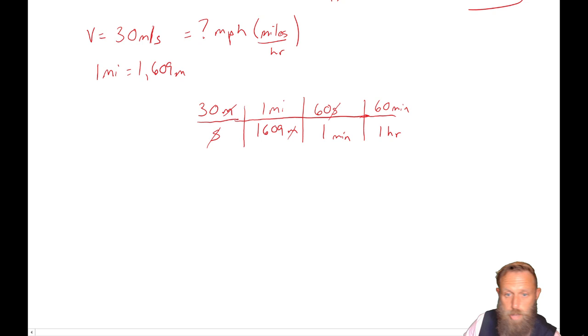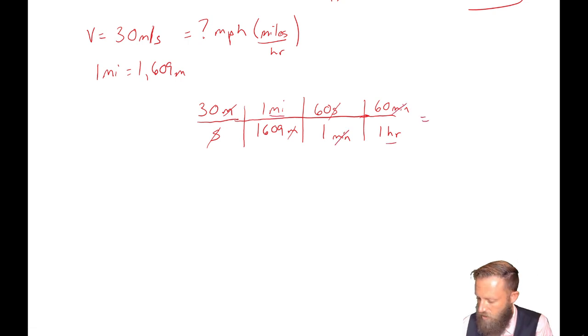All right. So now all that's left to do is to do some conversion. So if we get our calculators, we're going to find that we might take 30 times 60 times 60 divided by 1,609, divided by 1, divided by 1. It's going to give us 67 miles per hour. All right. So 67 miles per hour, 30 meters per second.